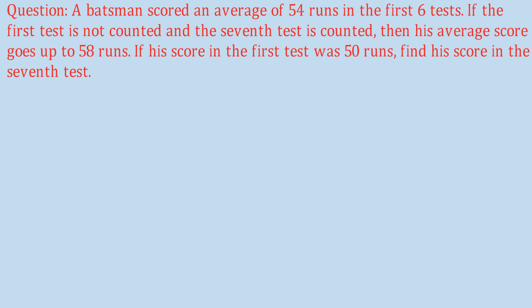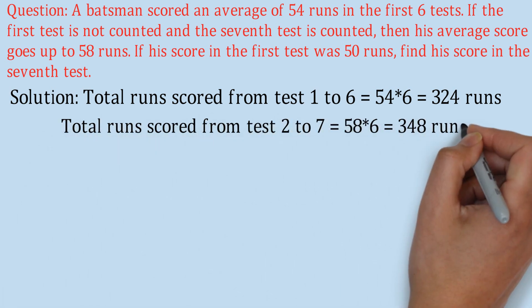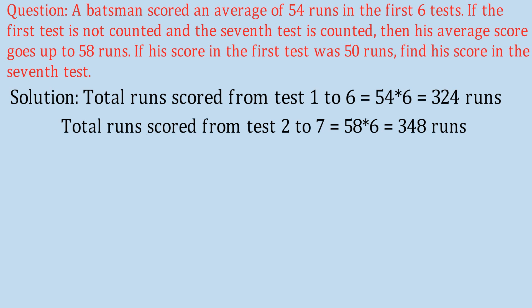We need to find how many runs he scored in the seventh test. Total runs scored from test one to test six: average equals total runs upon total matches, so total runs = 54 × 6 = 324 runs. Then total runs scored from test two to test seven = 58 × 6 = 348 runs, since the average is 58 for those six test matches.